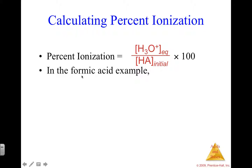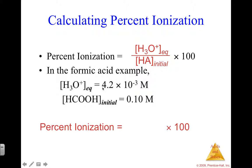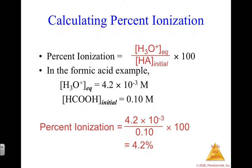In the formic acid example from a couple of slides ago, you solved for hydronium equilibrium molarity and were given an initial acid molarity, so we can just plug them in to solve for the percent ionization. Hydronium at equilibrium is 4.2×10⁻³, divided by our initial acid molarity, times 100.